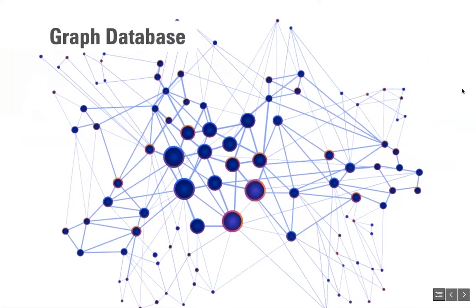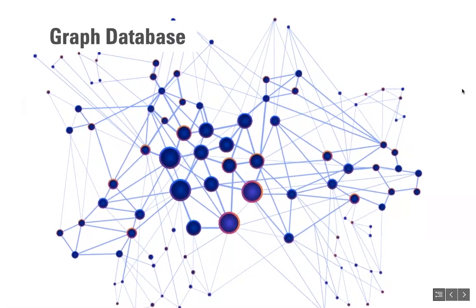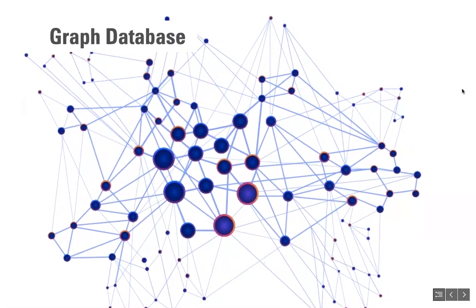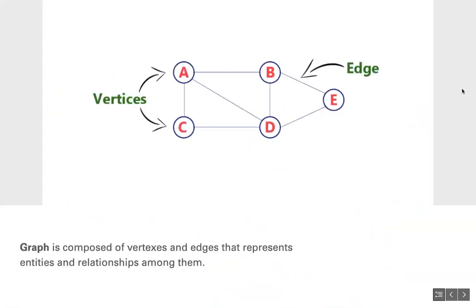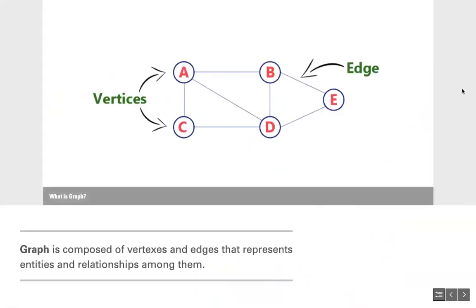Before explaining why we are shifting to graph databases, it's important to understand what a graph is. A graph is composed of vertices and edges that represent entities and relationships among them. This structure is the same as graph algorithms in mathematics. The combination of vertices and edges gives us the ability to better understand the connections between all those entities.